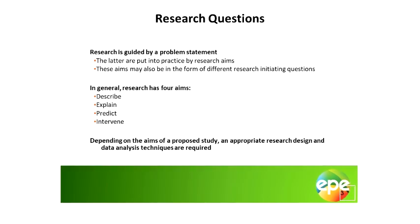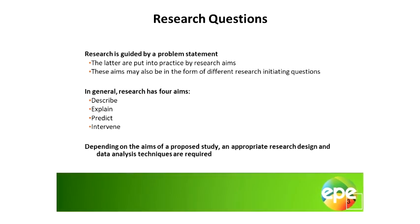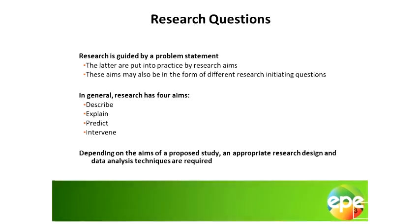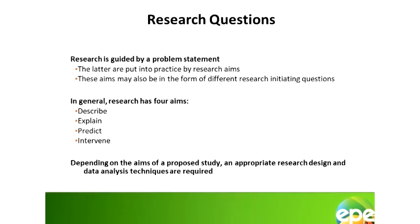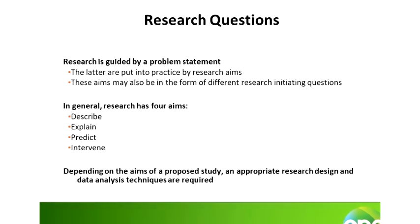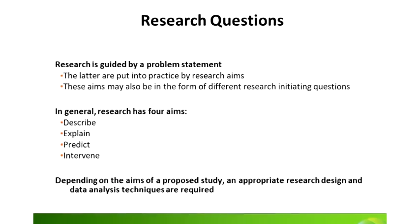Research has four aims: research would like to describe what is happening; research would also like to explain why something is happening; a third aim of research is to predict when something is likely to happen; and finally, research would like to improve something — to intervene.